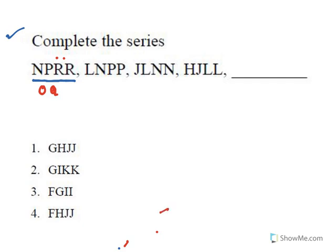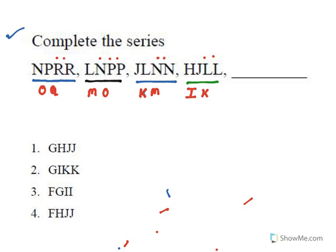For the next group starting with L: after L comes M, which is omitted, and N is given. After N comes O, which is omitted, and P is given and repeated. Then for the group starting with J: after J comes K, which is omitted, and L is given. After L comes M, which is omitted, and N is given and repeated. All of them follow the same pattern — one alphabet is skipped and the next is repeated.